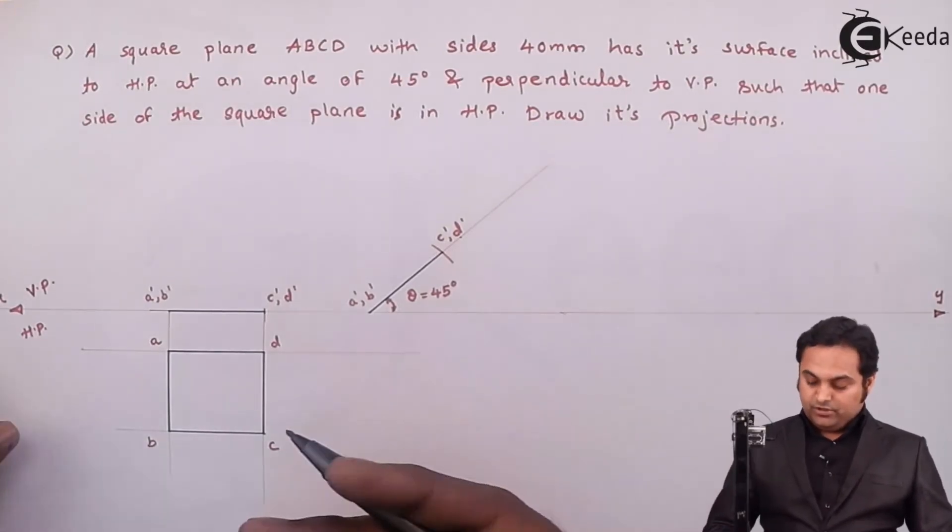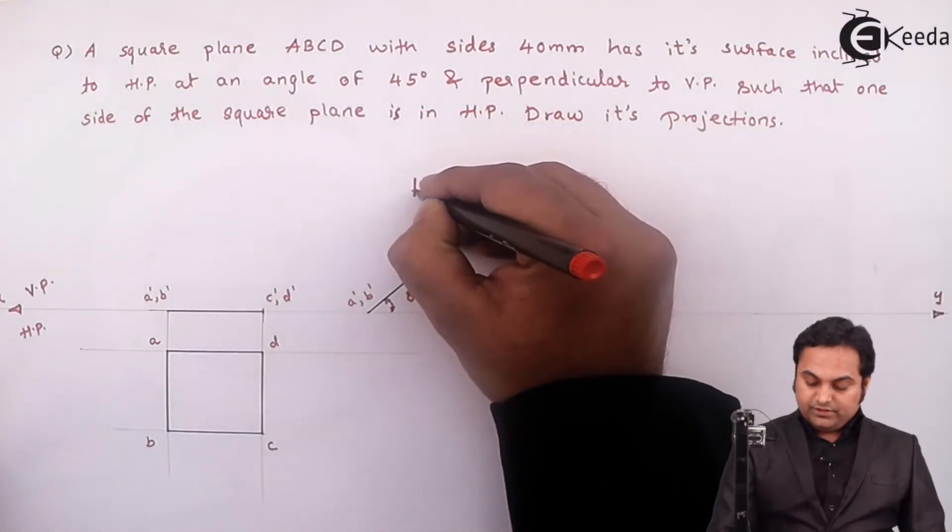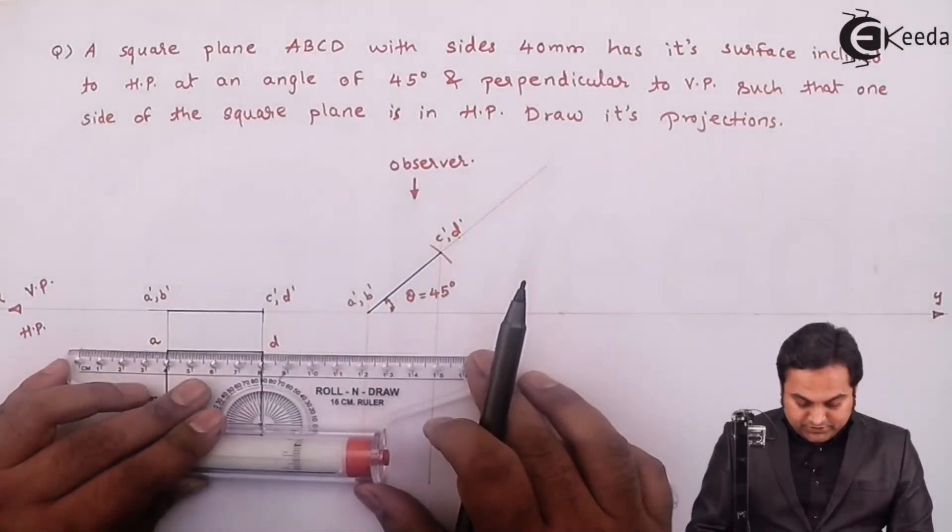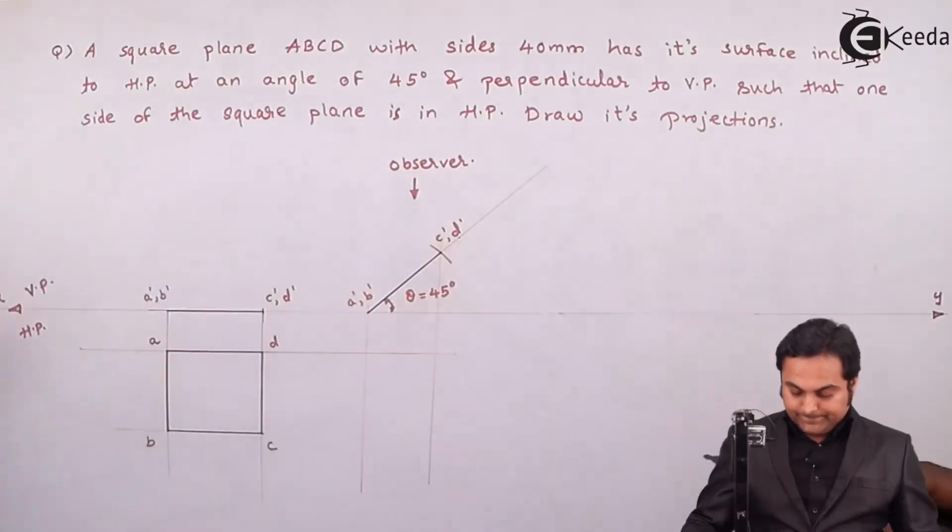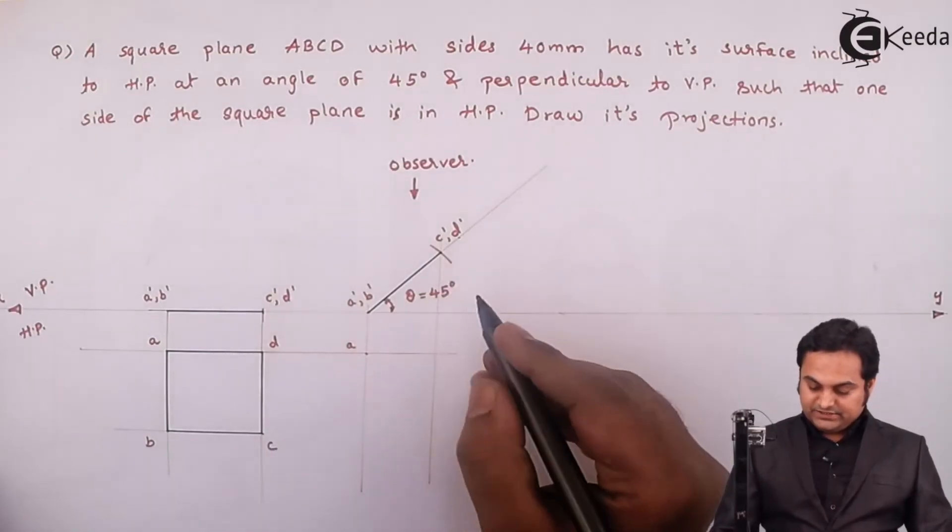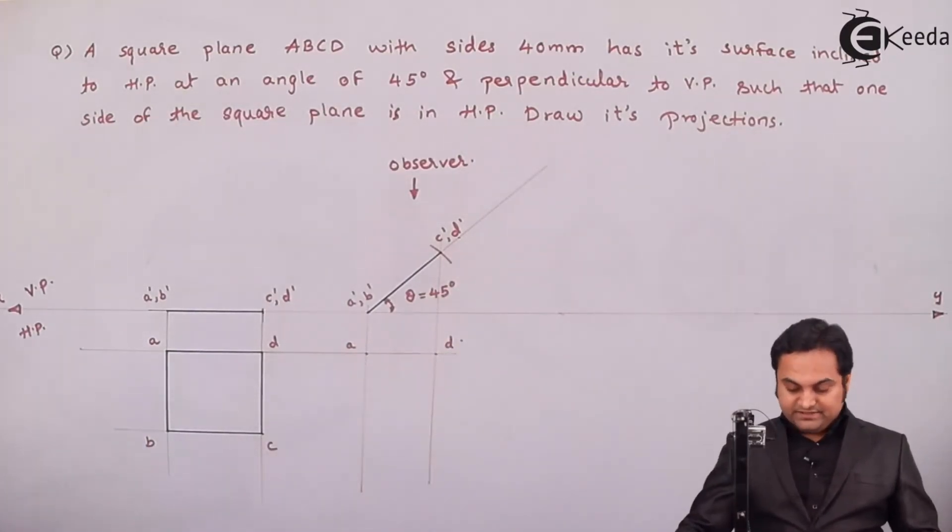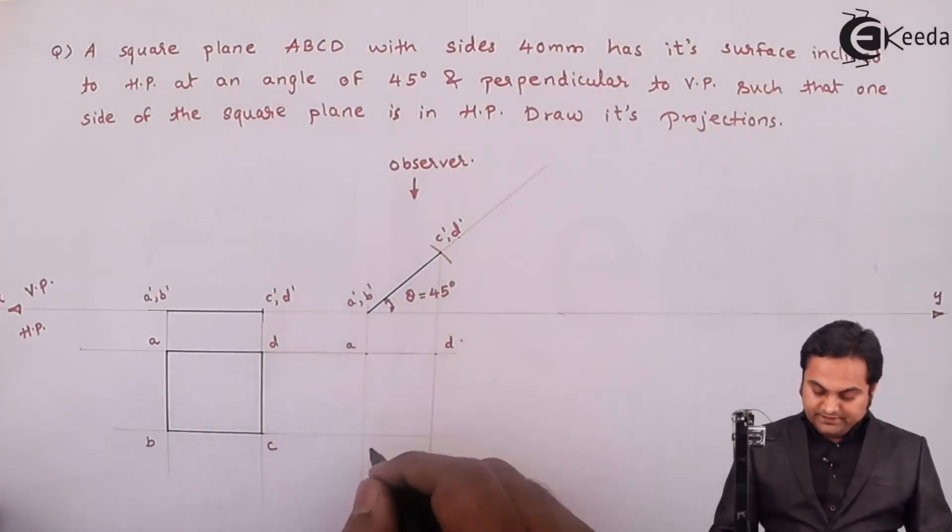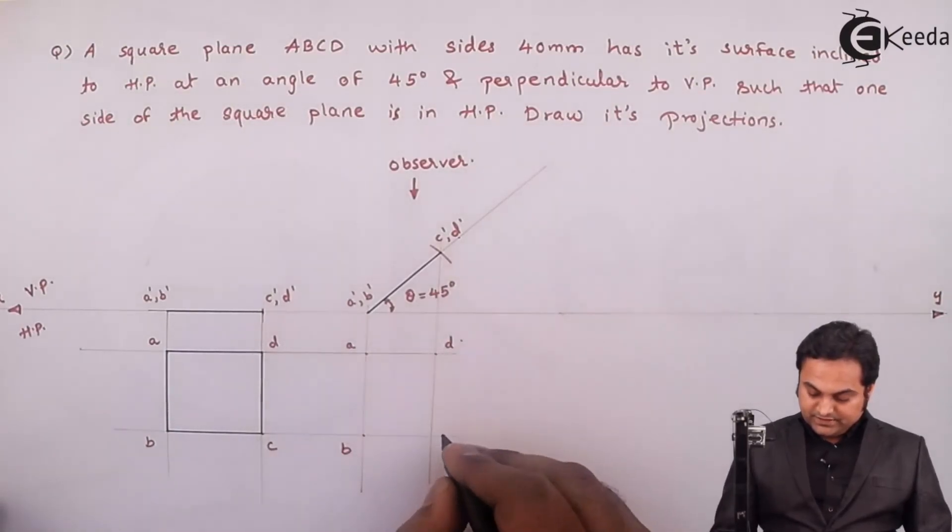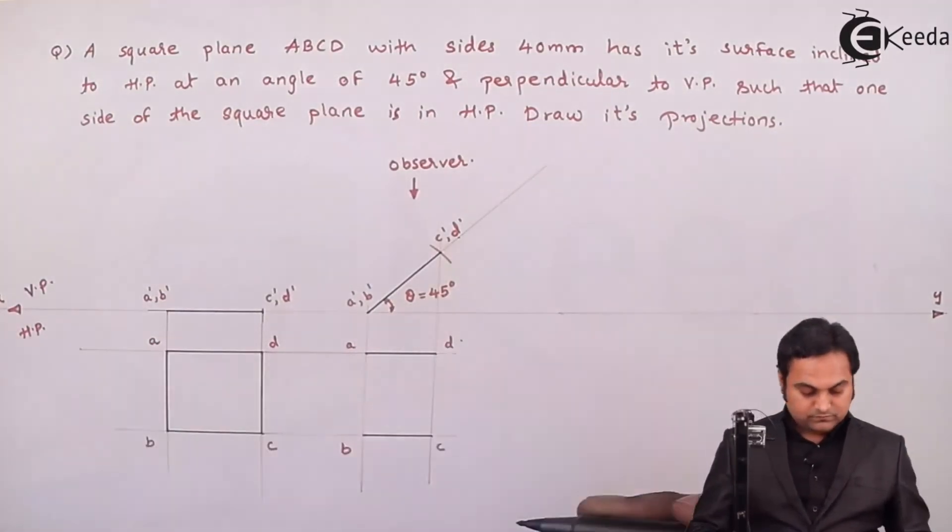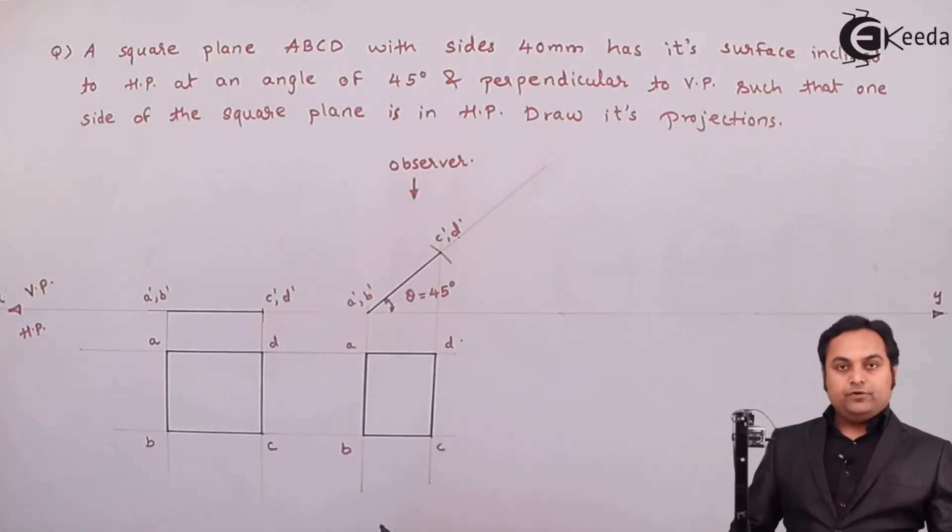For that we are looking here as an observer, so projecting these points A and D. Where point A and A' intersect, that will be point A. D and D' intersect at point D. Similarly for B and C, B and B', C and C'. So here I am getting these four points. Joining them in order, so this is the top view of this inclined square. Now it has become a rectangle.